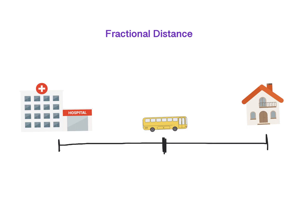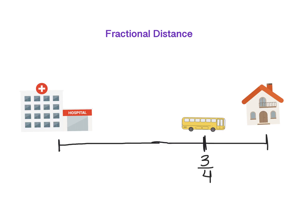Now let's say my bus was located more over here. Then what I could say is that my bus stop is maybe three-fourths of the distance from the hospital to my house. That's another way that you could describe fractional distance — by looking at the location of things.